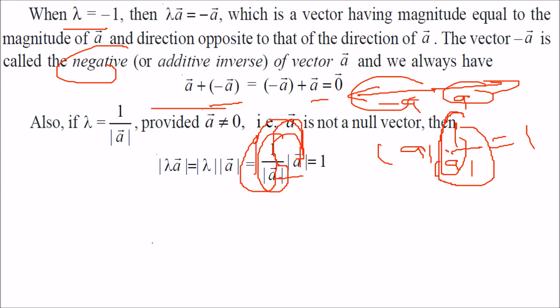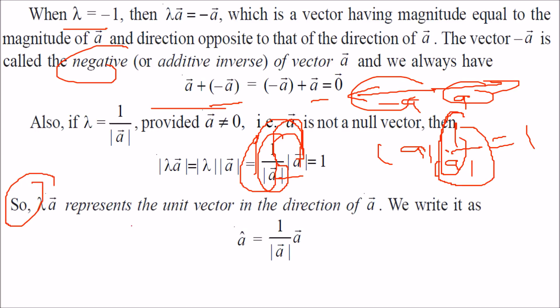This λa represents the unit vector in the direction of a. We write â = (1/|a|)a, where |a| is the magnitude of a and a is the vector. So â is the unit vector in the direction of a.